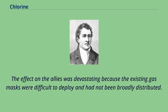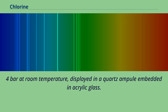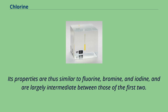The effect on the Allies was devastating because the existing gas masks were difficult to deploy and had not been broadly distributed. Chlorine, liquefied under a pressure of 7.4 bar at room temperature, is the second halogen, being a non-metal in group 17 of the periodic table. Its properties are thus similar to fluorine, bromine, and iodine, and are largely intermediate between those of the first two.